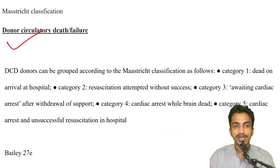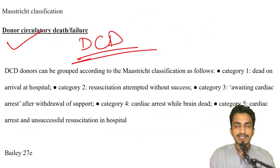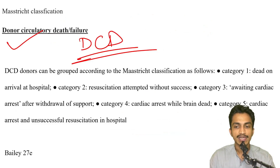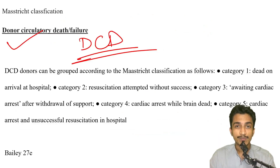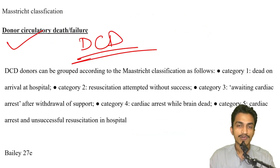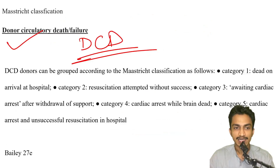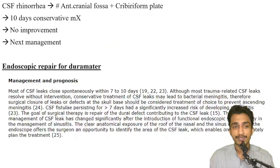Maastricht classification: this classifies Donation after Circulatory Death (DCD) donors into five categories — already covered in the must-know topics. The transplant chapter of Bailey is very very important; questions are asked multiple times. Never miss that chapter.